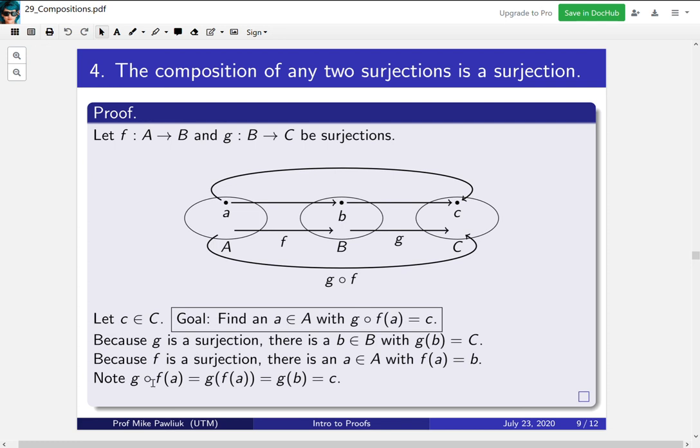And we know that because G composed with F says first apply F to A, so you go to B, and then you apply G to it, so then you go to C. So the composition goes from this little A to this C. And now we're done. The proof of injectivity in part 1 is similar, and you should try it on your own, using a diagram.